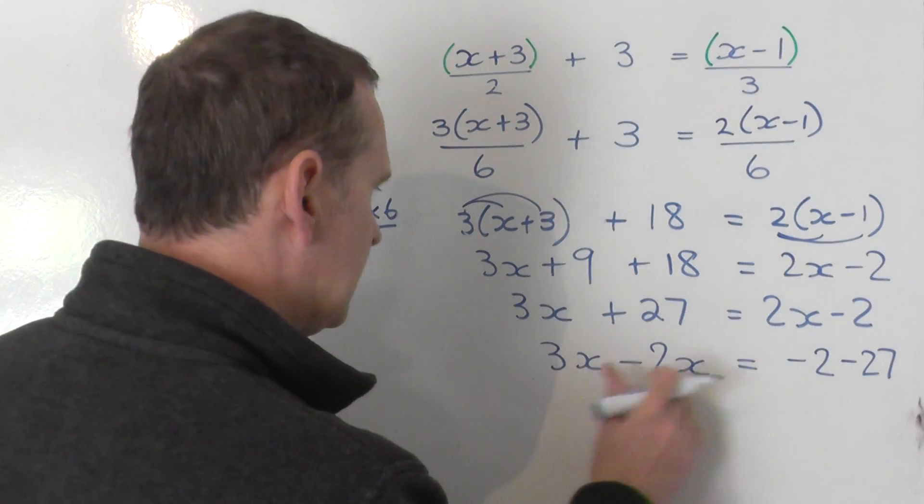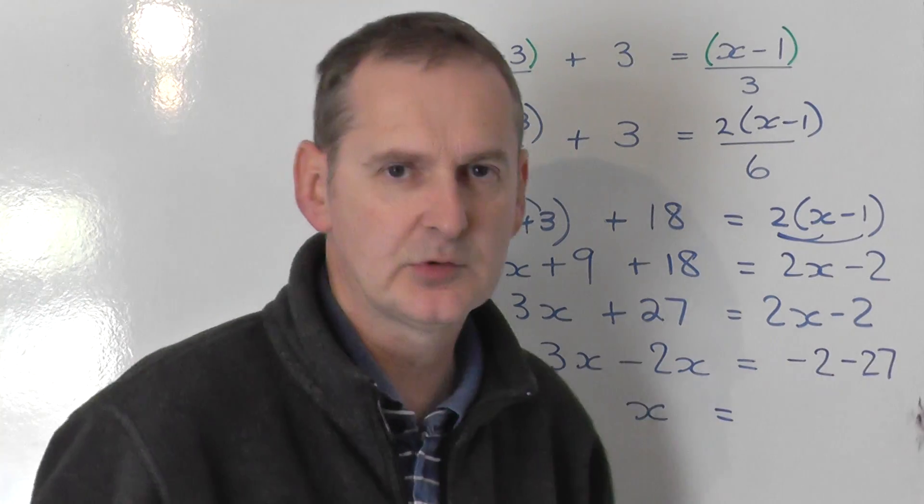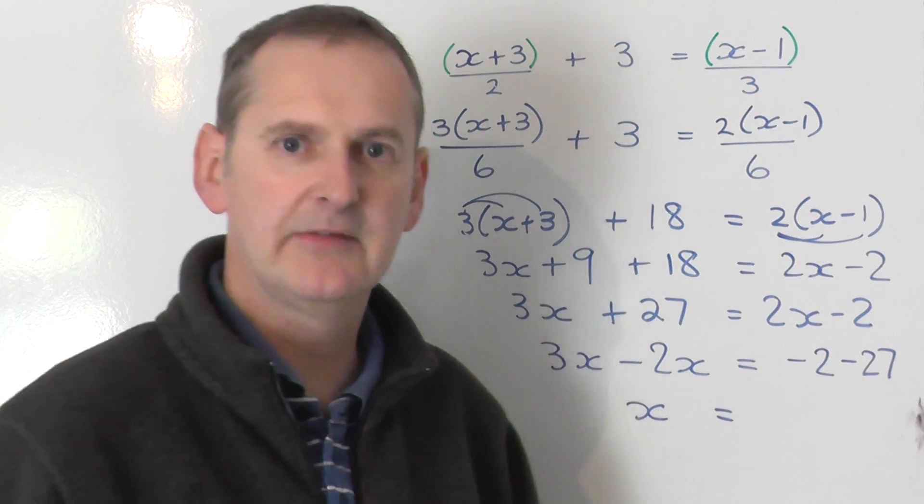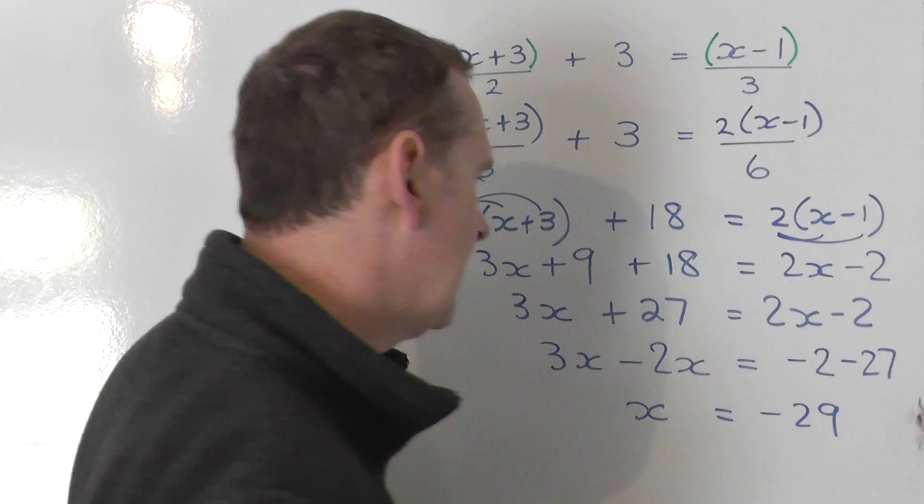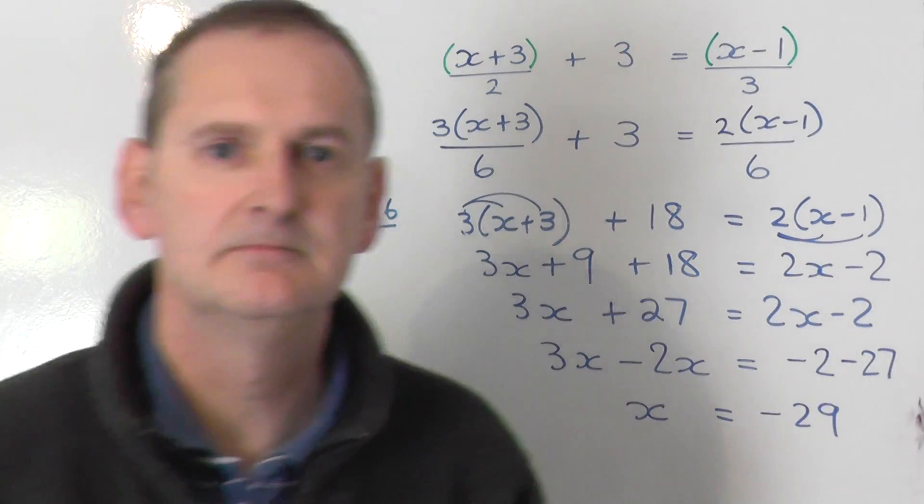Let's tidy up. 3x take 2x is a single x. And then negative 2 with negative 27, be careful, it's not a positive. Minus 2, minus 27. Army method, join forces. Minus 29 is the answer. And there is the solution. x equals negative 29. Thank you.